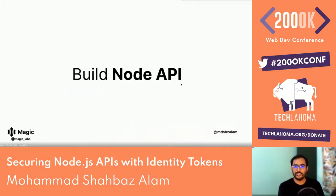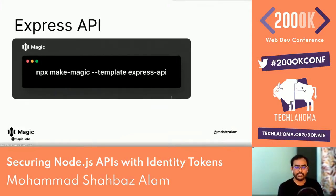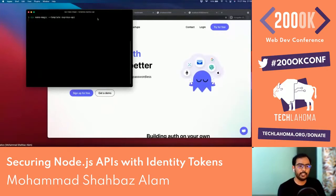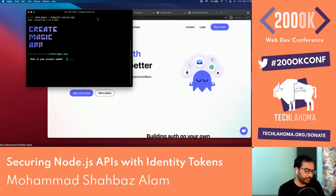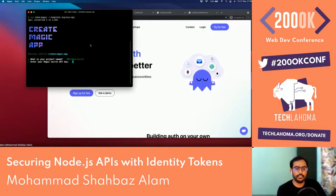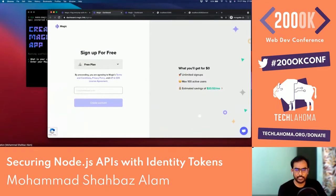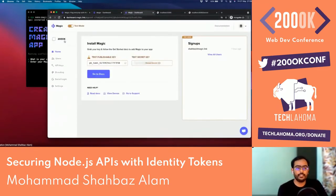Let's build a node API. There are many ways to do this, but we'll use the MakeMagic CLI tool developed by Magic. Feel free to run this in your terminal. You'll be greeted with a prompt asking for your app name — for example, '200 demo server.' Once you name your project, it will ask for a secret key. To get a secret key, visit Magic Link and sign up for a free account.